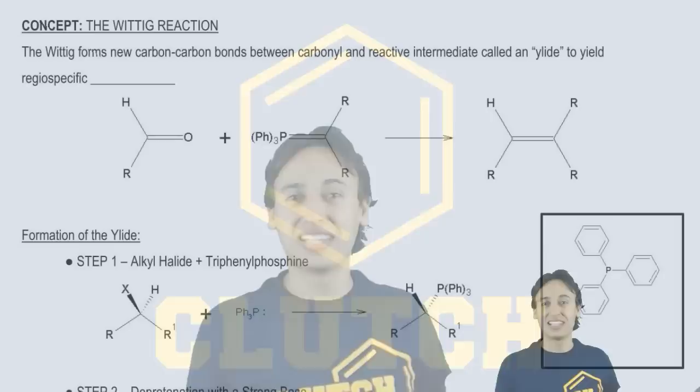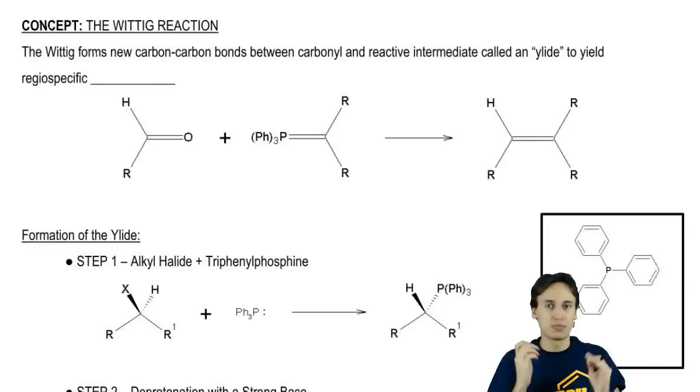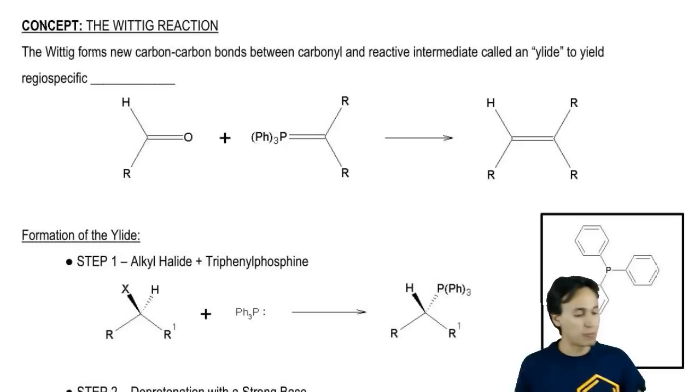The Wittig – first of all, I pronounce it also Wittig because it's like German. I say Wittig, but if someone says Wittig, don't freak out. This reaction is a special way to make new carbon-carbon bonds between aldehydes and ketones and what it's going to do is make regio-specific alkenes.